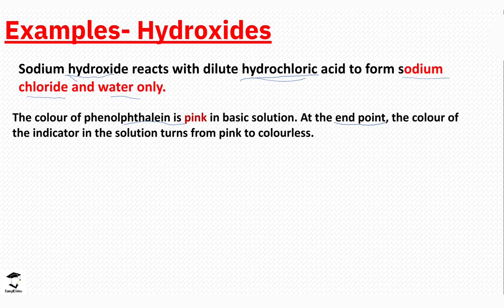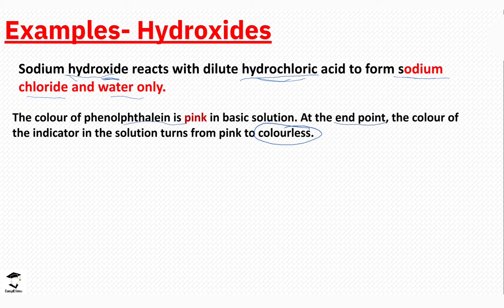Phenolphthalein is colorless in acidic solution and colorless in neutral solution. We are reacting a base, in which phenolphthalein turns pink, with an acid in which phenolphthalein is colorless. Initially you start with a pink color in the basic solution. As the reaction continues with the acid, neutral products are formed, and those neutral products cause the phenolphthalein indicator to turn colorless. The moment you see it turning colorless, it means we have reached the end point of the reaction.